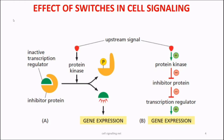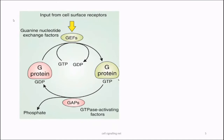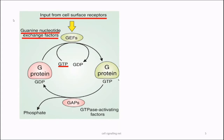There are a group of proteins that help in GDP-GTP exchange. On arrival of a specific signal, proteins called guanine nucleotide exchange factors, or GEFs, are activated. As the name implies, these GEFs facilitate the exchange of GDP with GTP.